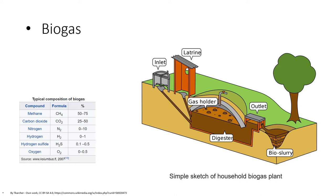Biogas is considered to be a renewable source because its production and use cycle is continuous and it generates no net carbon dioxide. As the organic material grows, it is converted and used, then regrows in a continually repeating cycle. From a carbon perspective, as much carbon dioxide is absorbed from the atmosphere in the growth phase of the primary bio-resource as is released when the material is ultimately converted into energy.